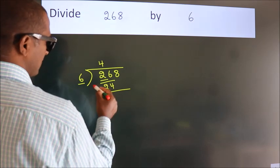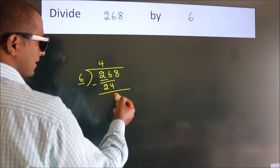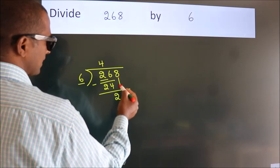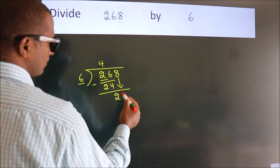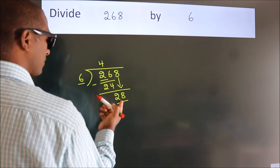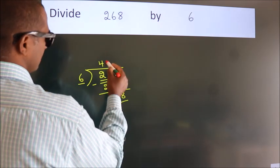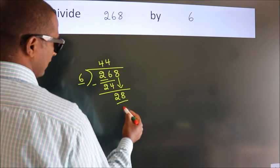Now we should subtract. We get 2. After this, bring down the next number, so 8 down, so 28. A number close to 28 in the six table is six fours, 24.